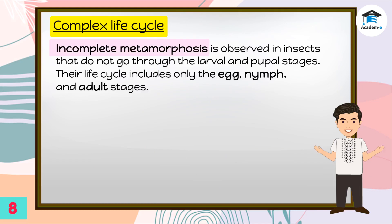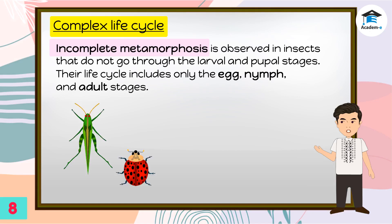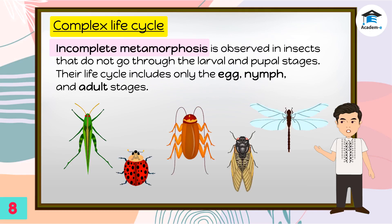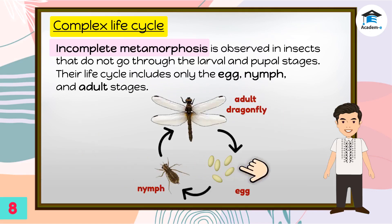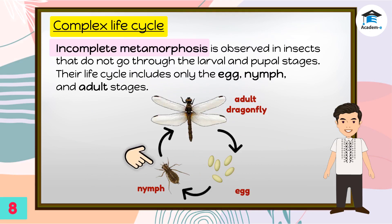Incomplete metamorphosis is observed in insects that do not go through the larval and pupal stages. Their life cycle includes only the egg, nymph, and adult stages. Among the insects that undergo this kind of metamorphosis are grasshoppers, bugs, cockroaches, crickets, and dragonflies. The life cycle begins as an egg. Then the egg hatches into a nymph, or tiny adult that does not have wings yet. As the nymph grows into an adult, it develops wings and lays eggs, and a new life cycle begins.